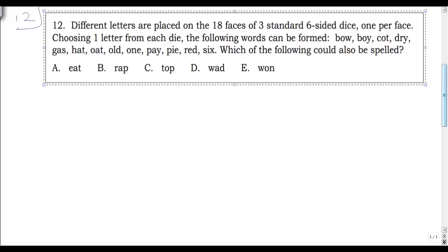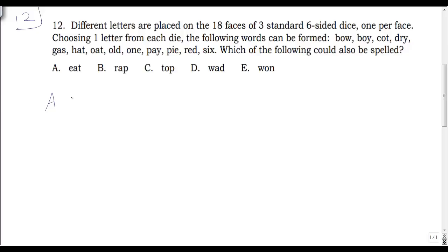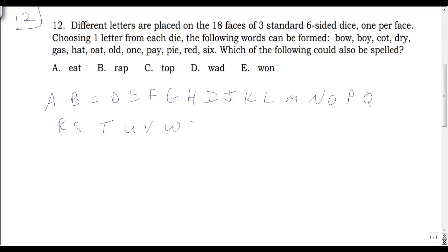First, I want to count how many different letters appear. We have three dice with six sides each — 18 total faces. The question is whether there are 18 different letters or if some letter appears on two dice. I'll make a table of the alphabet and cross out letters as I see them.